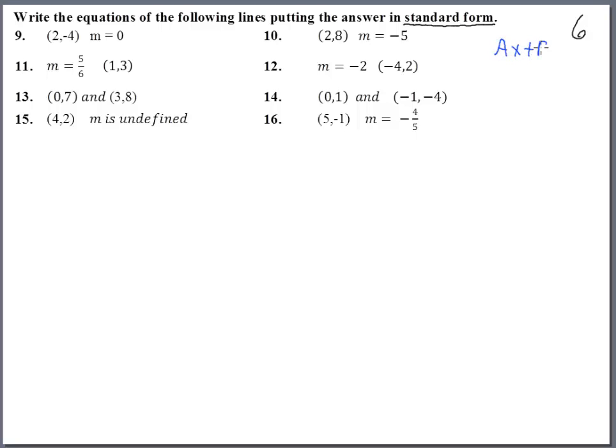Standard form is Ax plus By equals C. Some people write it as Ax plus By minus C equals zero - I don't mind either way, but I'll use the first one. Remember, the slope is the opposite of A over B, and we're going to be using that quite a bit.